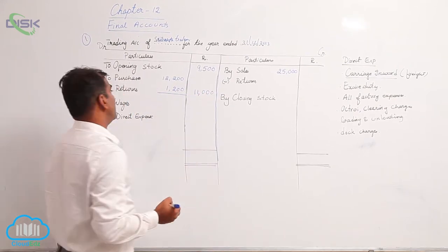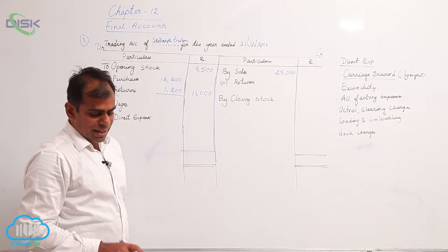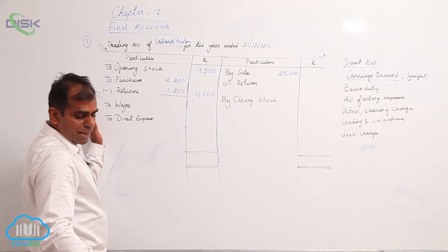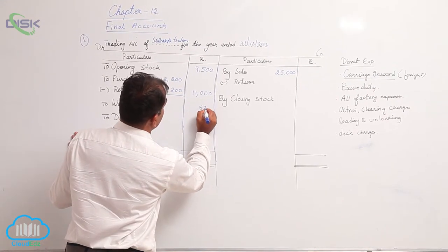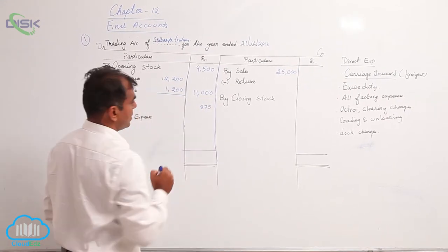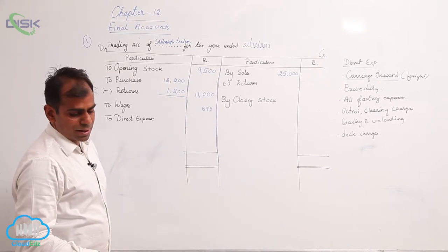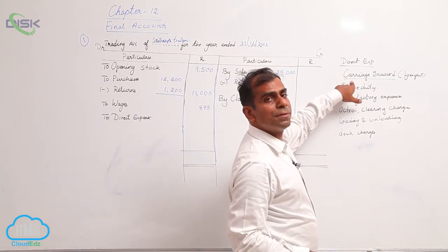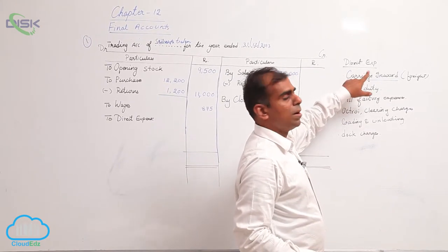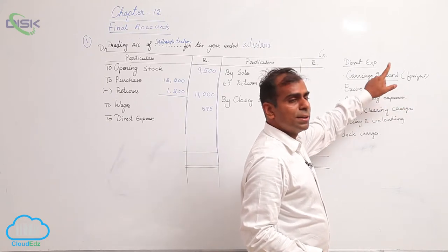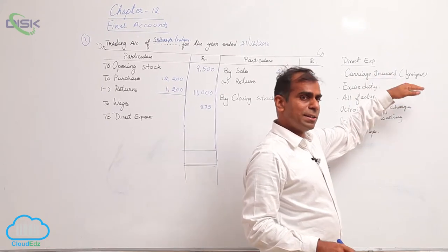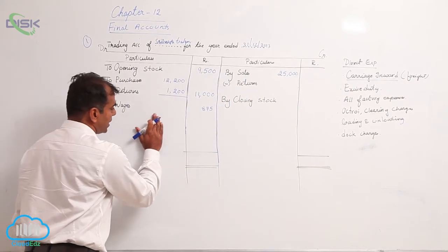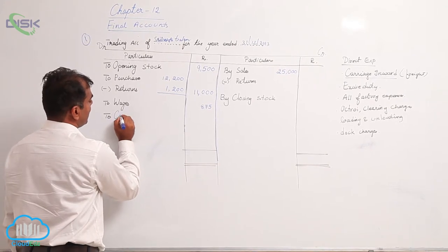Now let us see what is the next item. The next item is wages, so wages is also there in the format. I am entering 875 against wages. Now going across to the other side we have carriage and carriage is an example of direct expense. The word carriage, the word freight, the word carriage inward or freight inward all mean the same. So I am just removing this word direct expense and writing here carriage. So we have carriage the amount being 500.